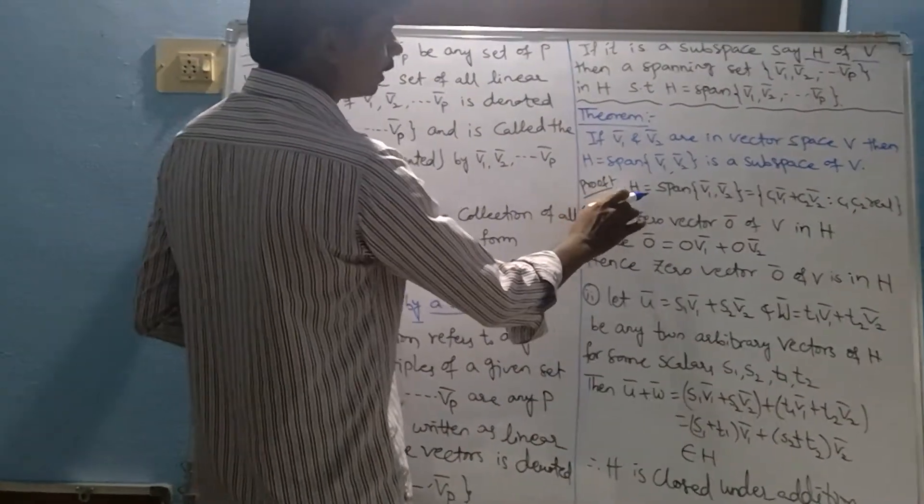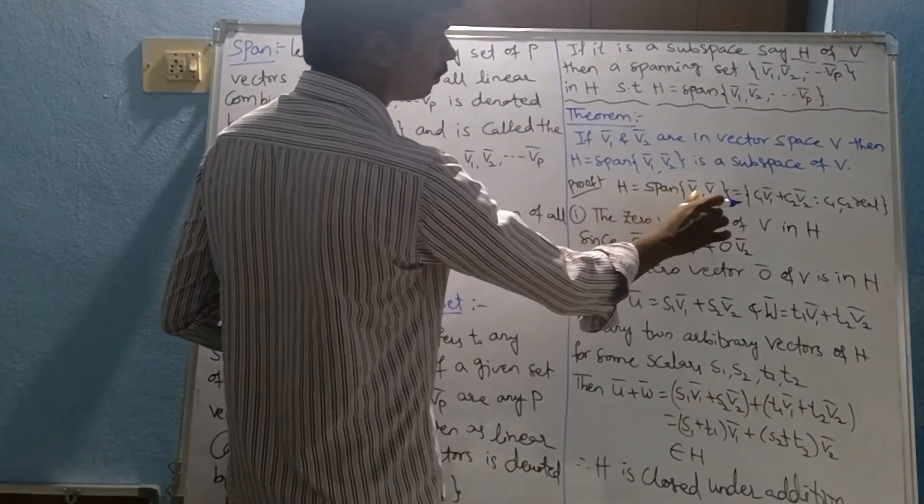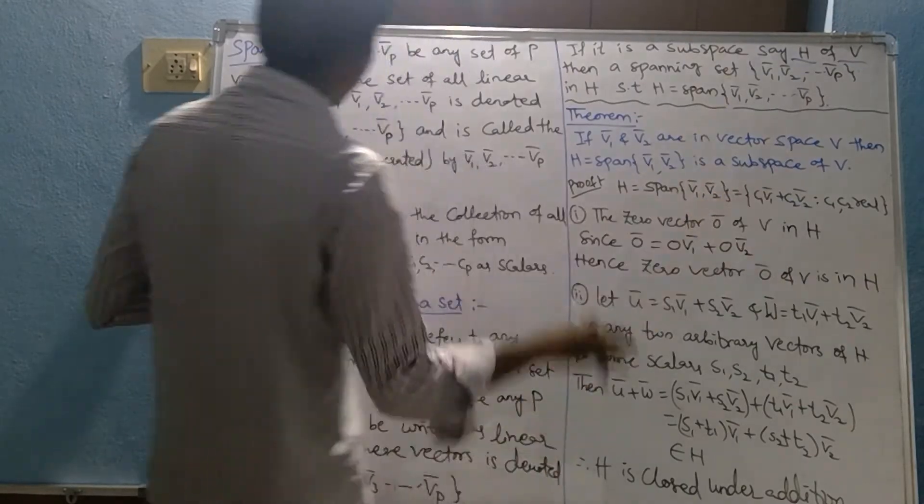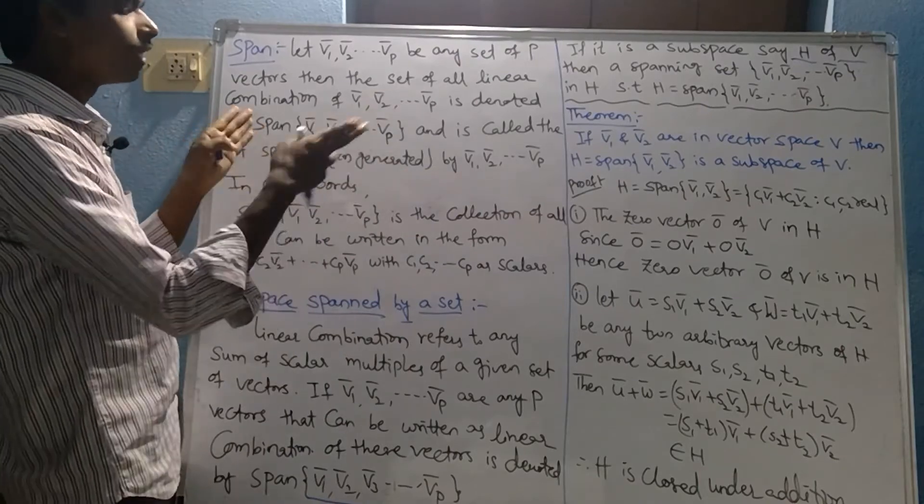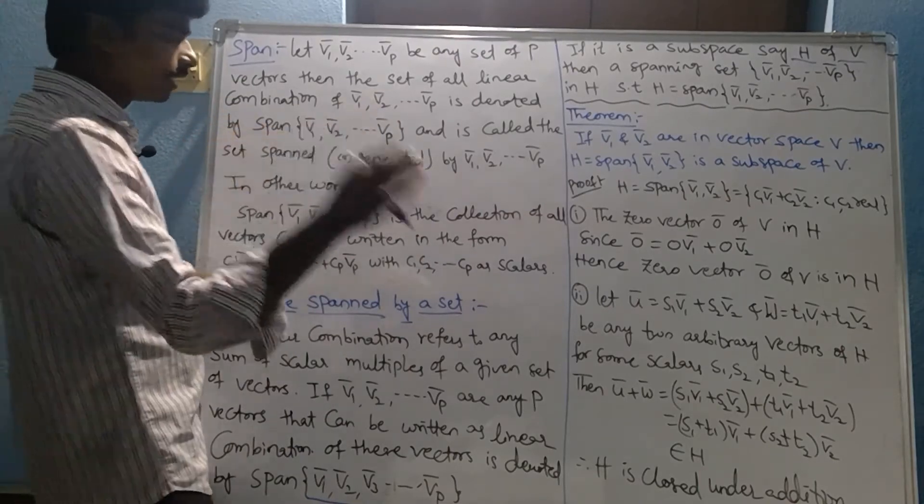Now, proof. Here H equals span of V1 bar, V2 bar equals C1 V1 bar plus C2 V2 bar. In the definition we are using here, we only have to take two variables as two vectors. Let's see.